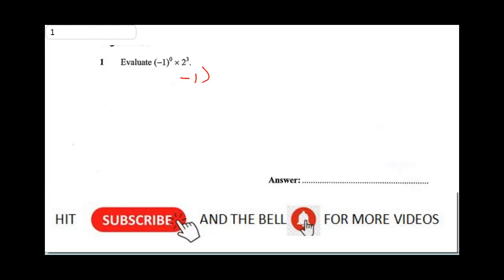Evaluate (-1)^0 × 2^3. Now from your indices, you know that any number raised to power 0 is 1. So this is 1 × 2^3, and this is 1 × 8, which gives you a final answer of 8.